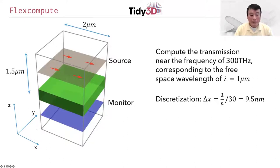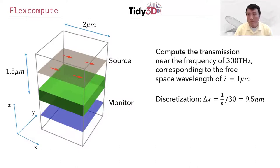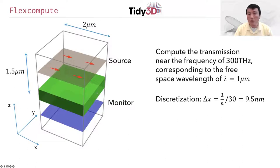In the xy direction, we choose the size of the computational domain to be 2 microns. For this problem, it is an overkill. In fact, because the silicon slab is uniform in the x and y dimensions, you can choose a much smaller computational domain size — maybe even 0.1 or 0.2 microns would have worked.